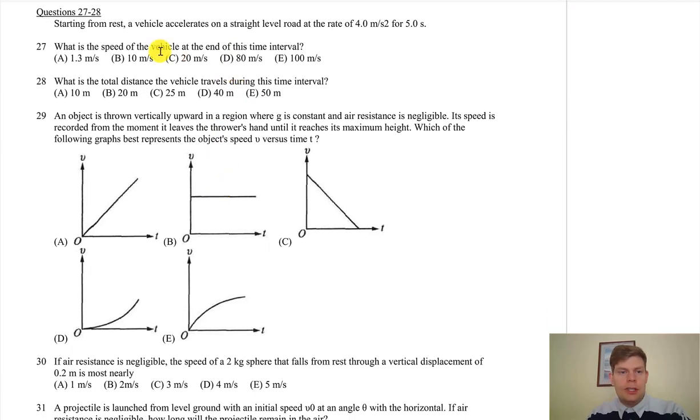Alright, so we got some vehicle accelerating on a straight road at a rate of four meters per second squared for five seconds. What's the speed of the vehicle at the end of the time interval? Four times five—it would be, assuming yeah it started from rest, so 20. It's not so bad. What's the total distance the vehicle travels during this time?